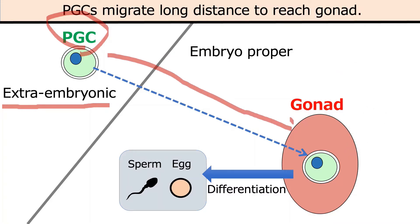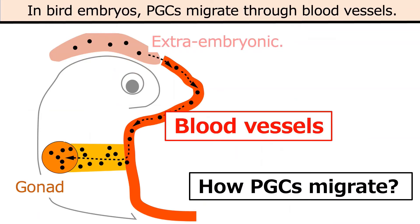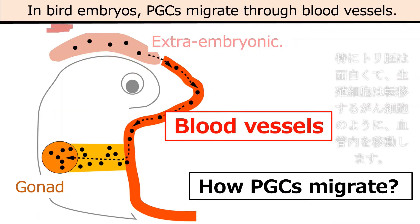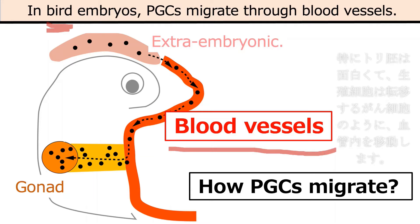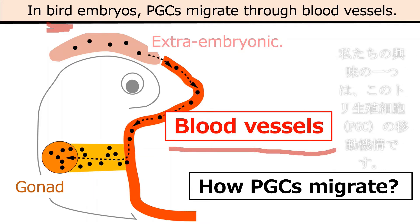Especially in bird species, germ cell migration is interesting. The germ cells migrate through blood vessels, as if cancer cells undergo metastasis. We want to know the mechanism underlying germ cell migration through the blood vascular network, and how germ cells behave and use gene products to accomplish it.